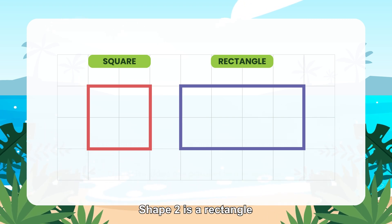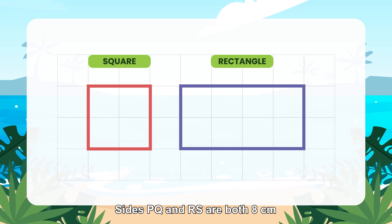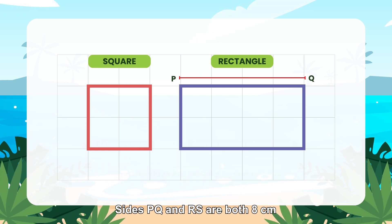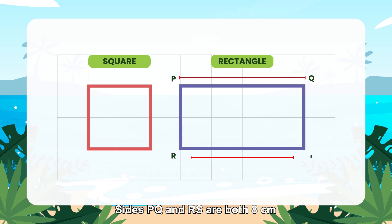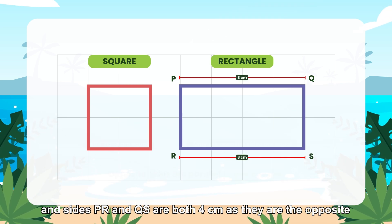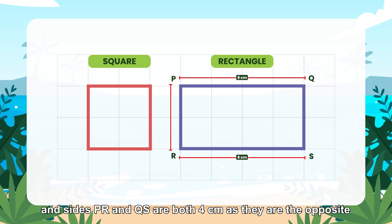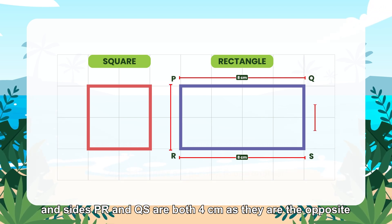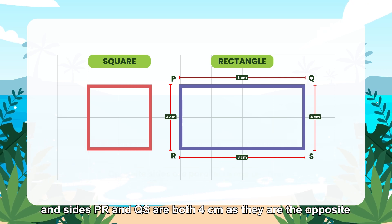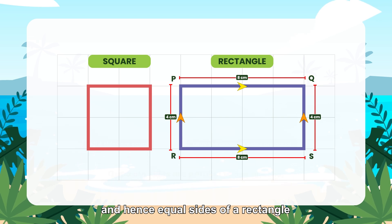Shape 2 is a rectangle. Sides PQ and RS are both 8 cm, and sides PR and QS are both 4 cm, as they are the opposite and hence equal sides of a rectangle.